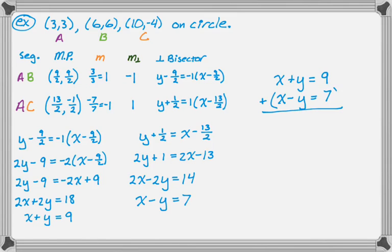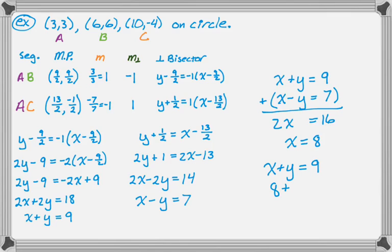So I have the system: x plus y equals 9, and x minus y equals 7. I add the equations to cancel the y's: 2x equals 16, so x equals 8. Substituting back: 8 plus y equals 9, so y equals 1. The center of the circle is the point (8, 1).